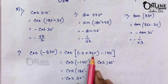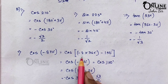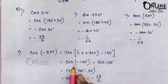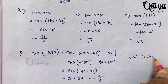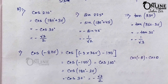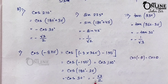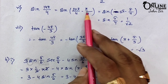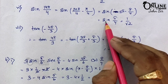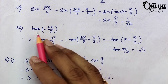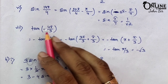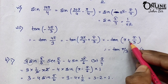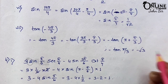Problem 5: cos(−870°). −870° = −2×360° − 150°, so n = −2. Since cos(−θ) = cos θ, we have cos(150°) = cos(180°−30°) = −cos(30°) = −√3/2. Problem 7: sin(19π/4) = sin(20π/4 − π/4) = sin(5π − π/4) = sin(π/4) = 1/√2. And tan(−4π/3): since tan(−θ) = −tan θ, we get −tan(4π/3) = −tan(π + π/3) = −tan(π/3) = −√3.